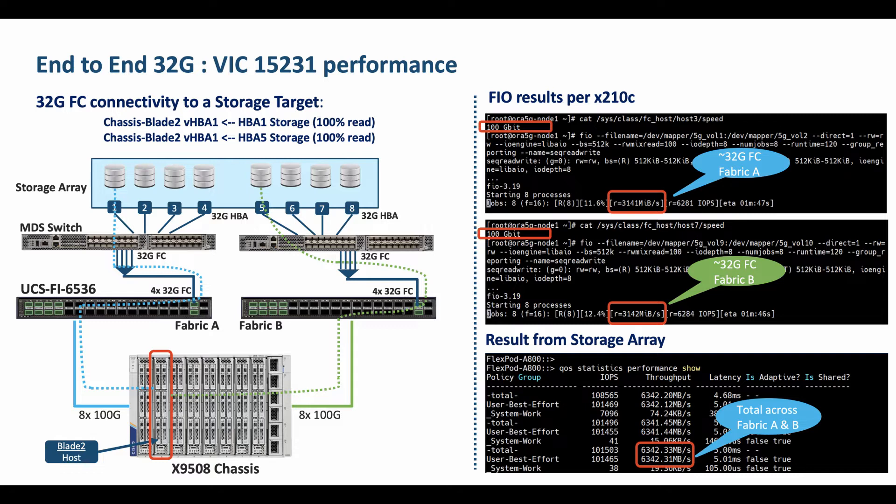The first two screen captures on the right show the VHVAs are 100GB with the VIC-15231. The server is presented with storage LUNs across both the A and B fabrics over the 32GB fiber channel connection to the storage target. It has REL installed and uses default VHBA BIOS and OS policies.